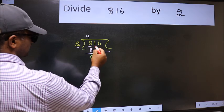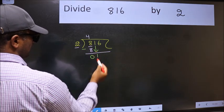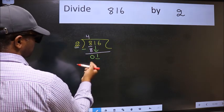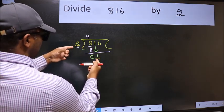After this, bring down the beside number. So 1 down. Now here we have 1 and here 2. 1 is smaller than 2.